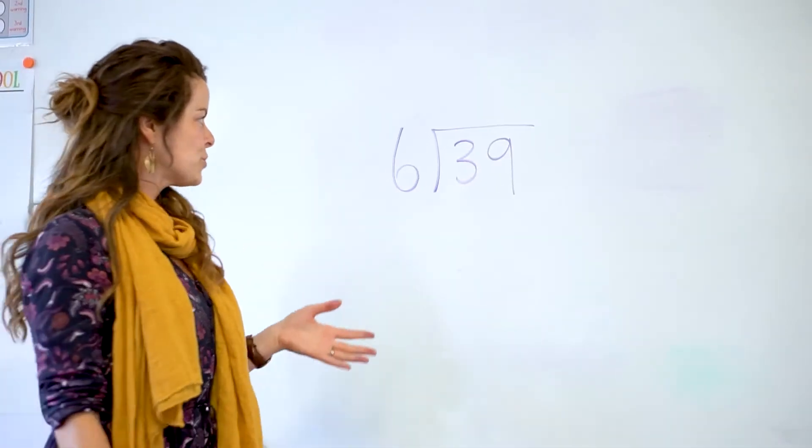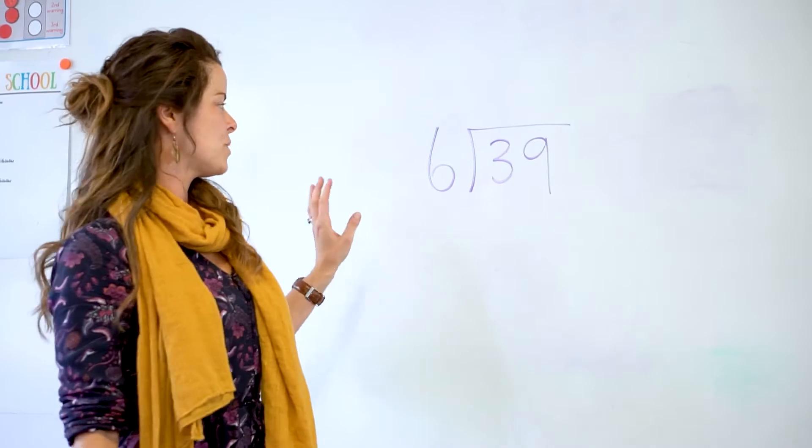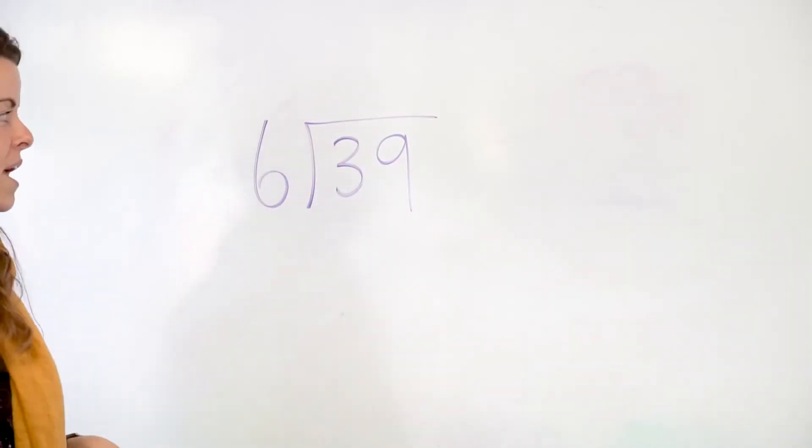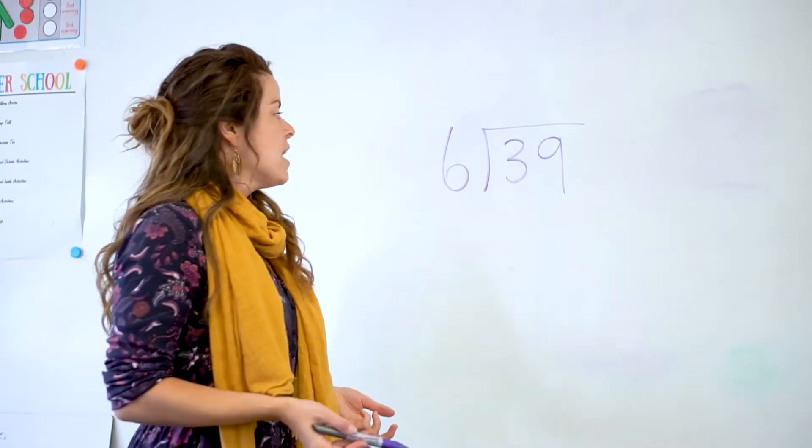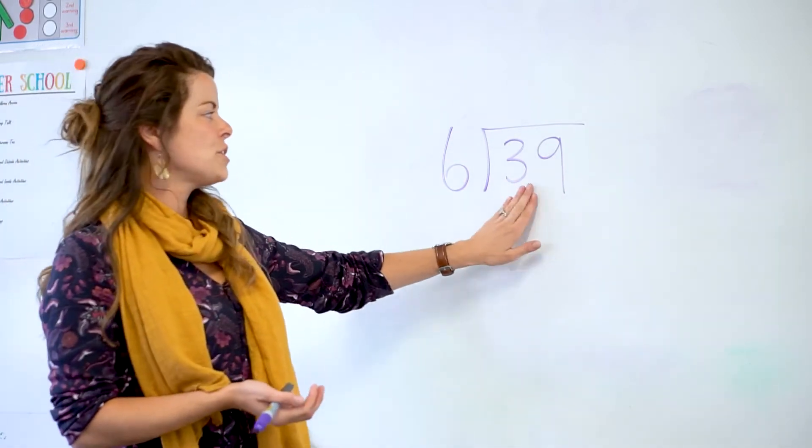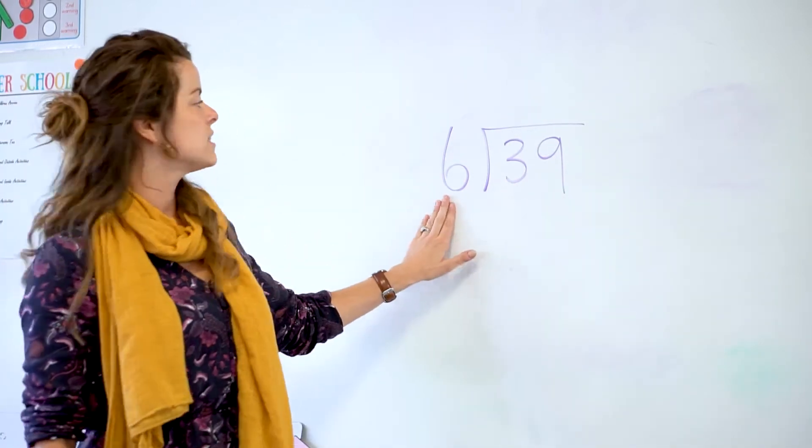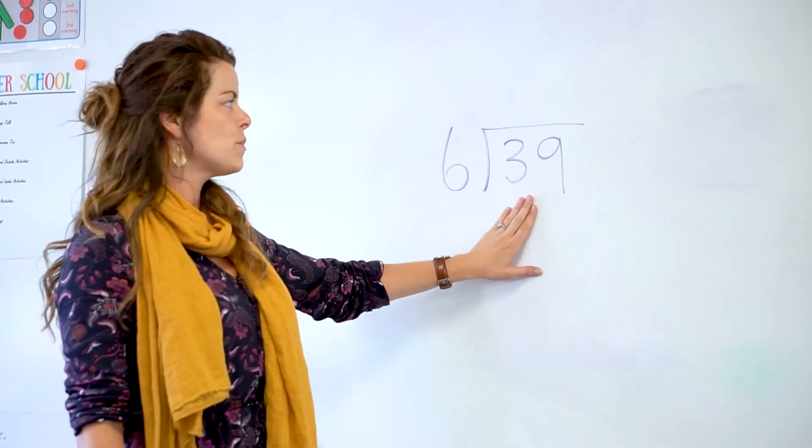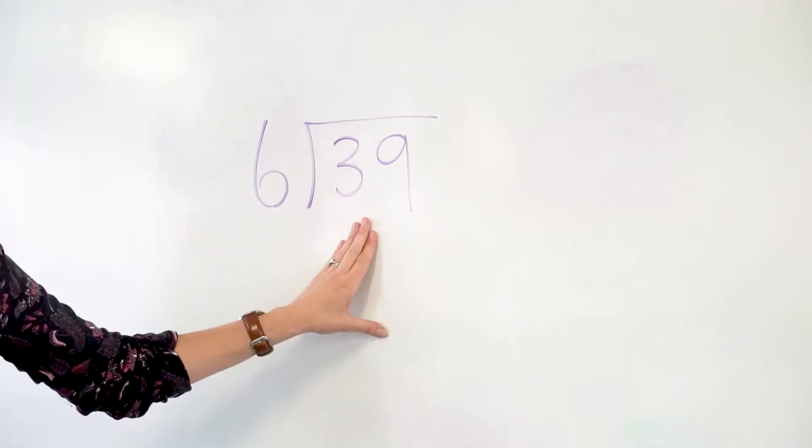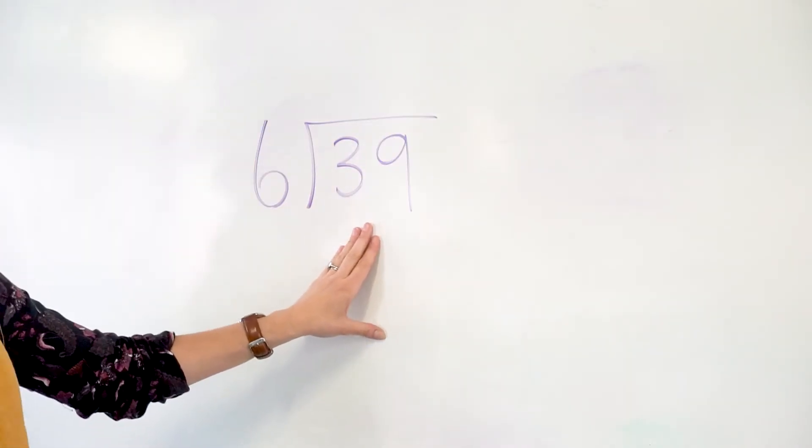The next example I want to show you is division with a single digit number into a double digit number with remainders. So we'd be looking at 39 divided by 6, or how many times does 6 go into 39. When we're working with division, quite often students have strength in multiplication, so we work to that strength as well.